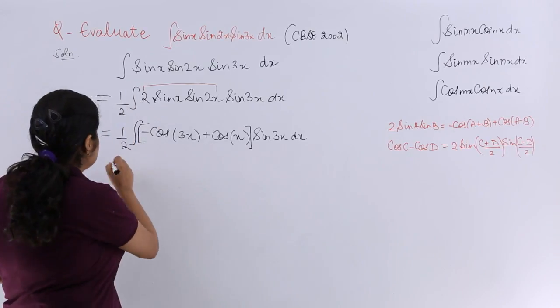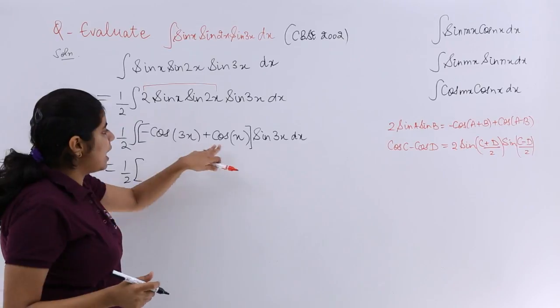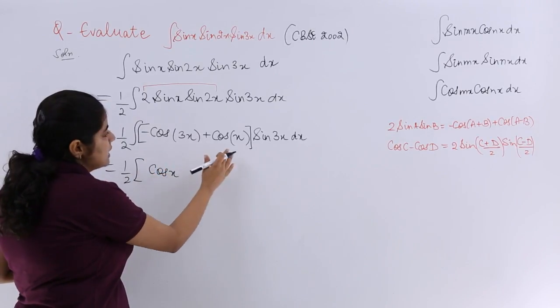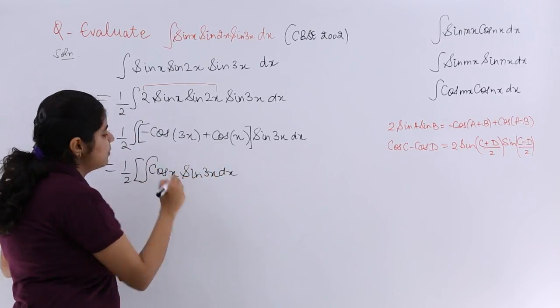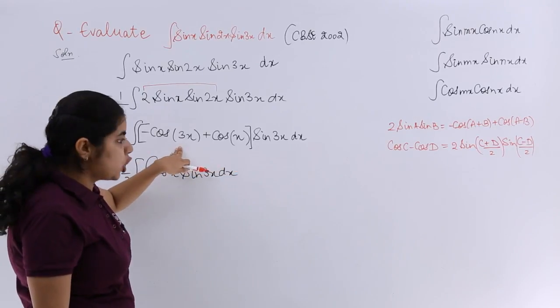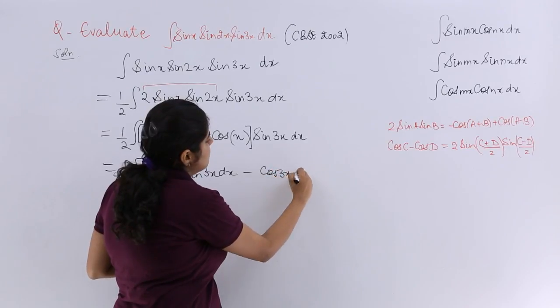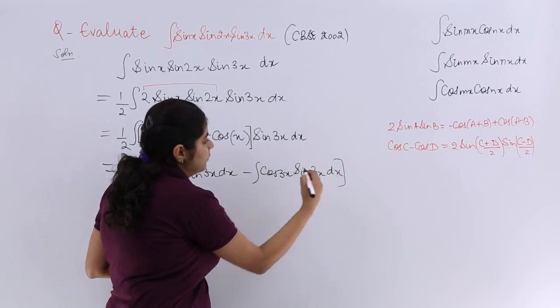In the next step, it is nothing but 1 by 2 then you have cos x minus cos 3x. So it can become cos x then multiply by sin 3x dx integral. Next what it can become is we have cos 3x in negative, so minus cos 3x times sin 3x dx integral.